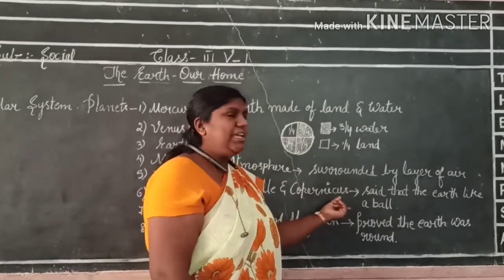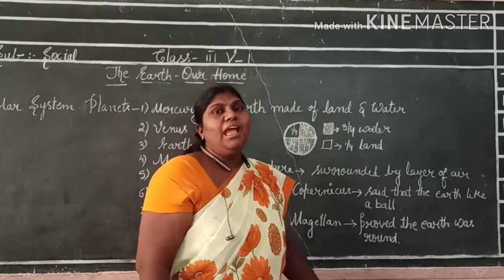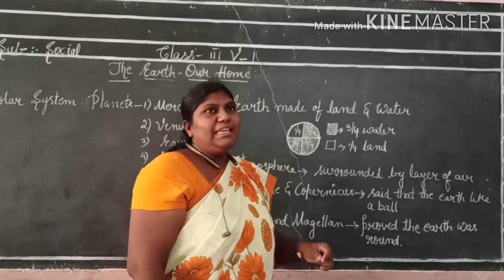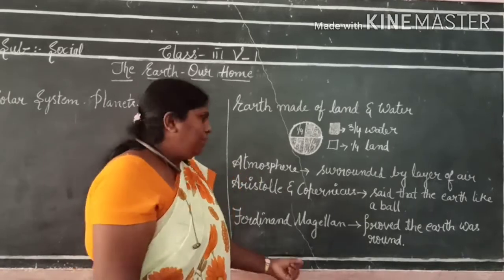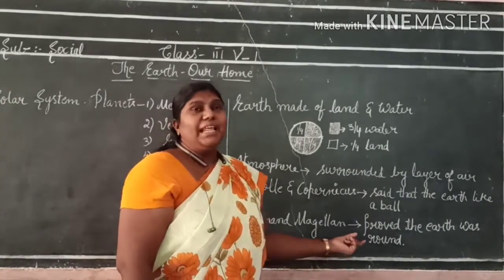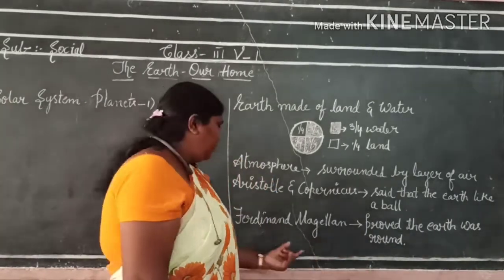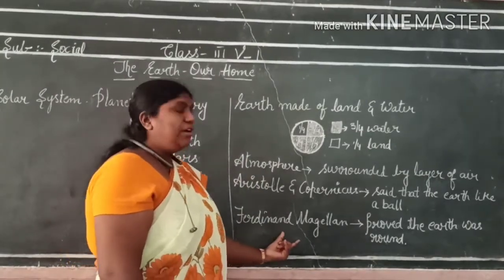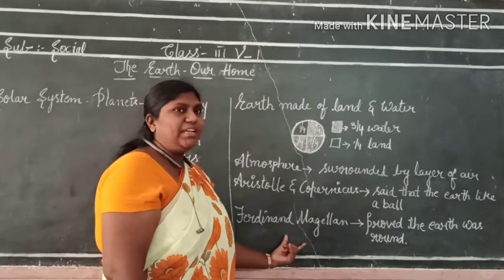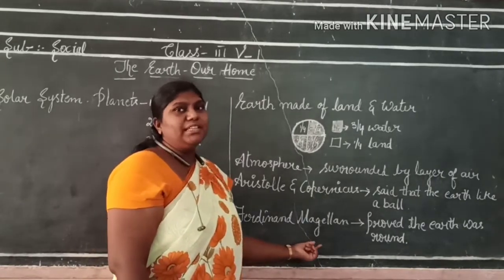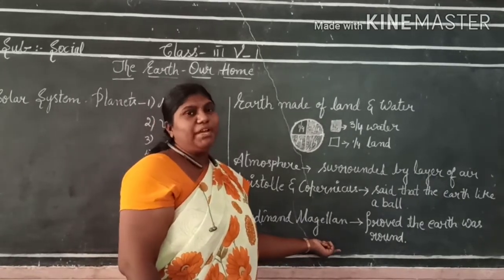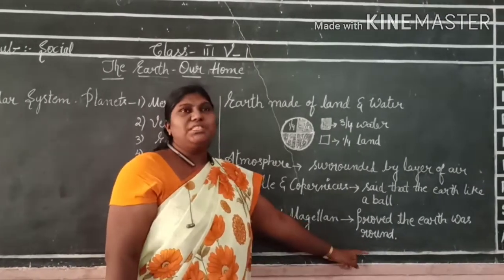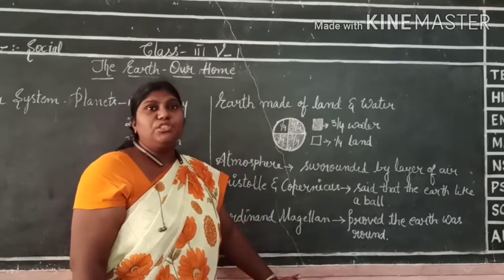After Aristotle and Copernicus stated this, one man proved that the Earth was round in shape. Ferdinand Magellan — he is a great person, the first person in the world — proved that the Earth was round in shape and not flat.